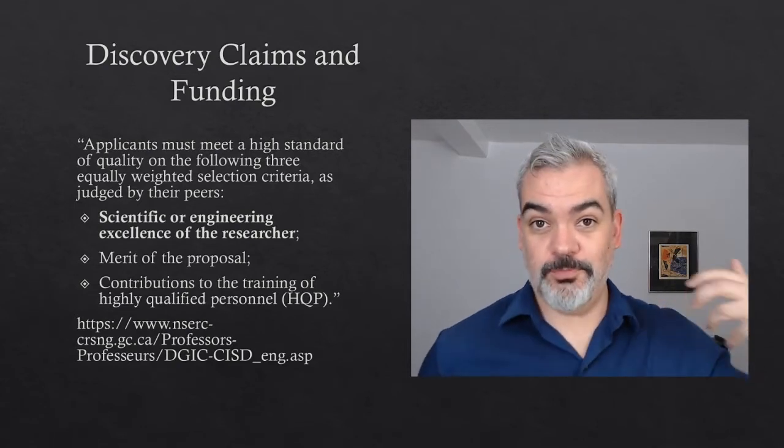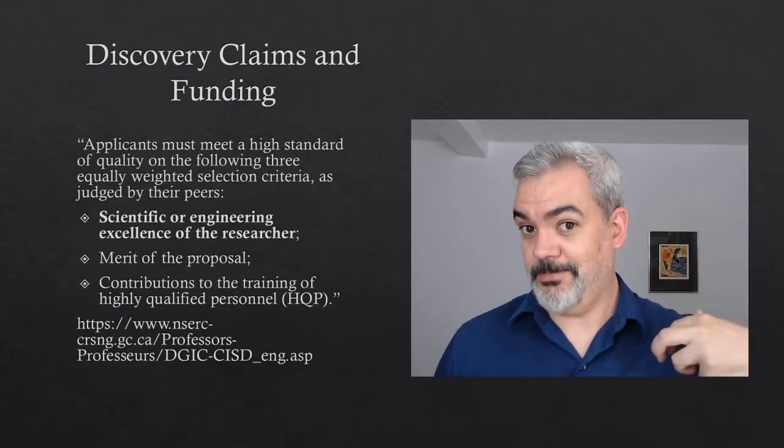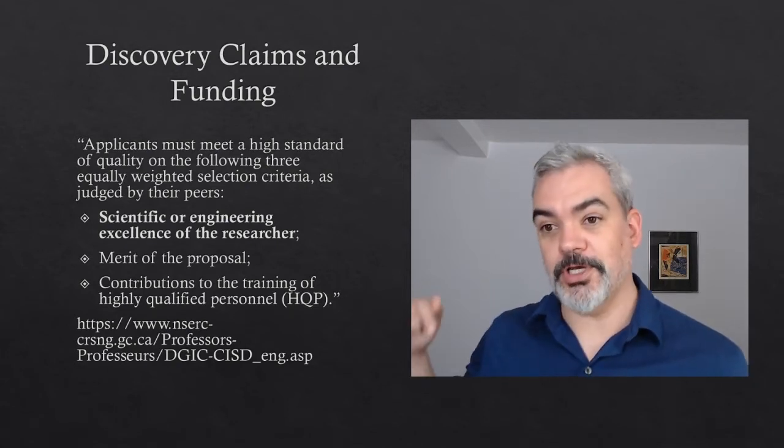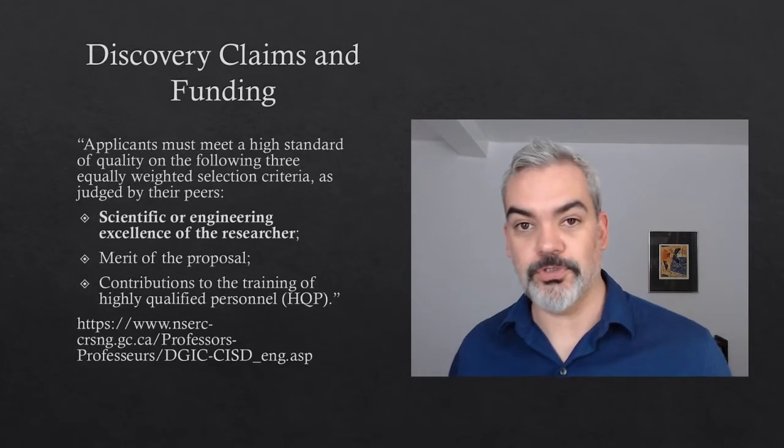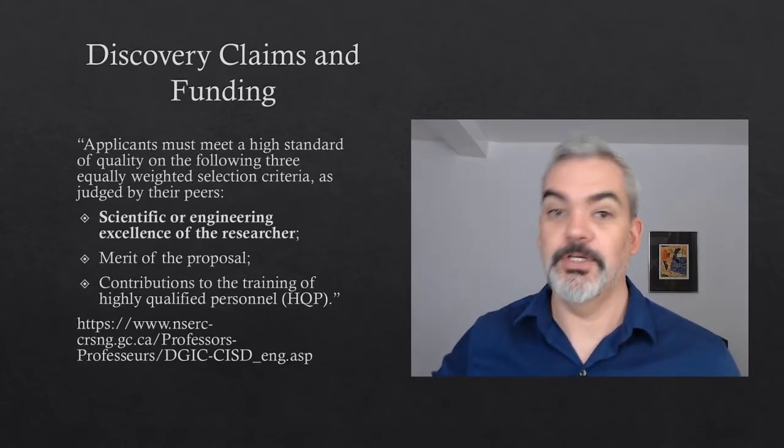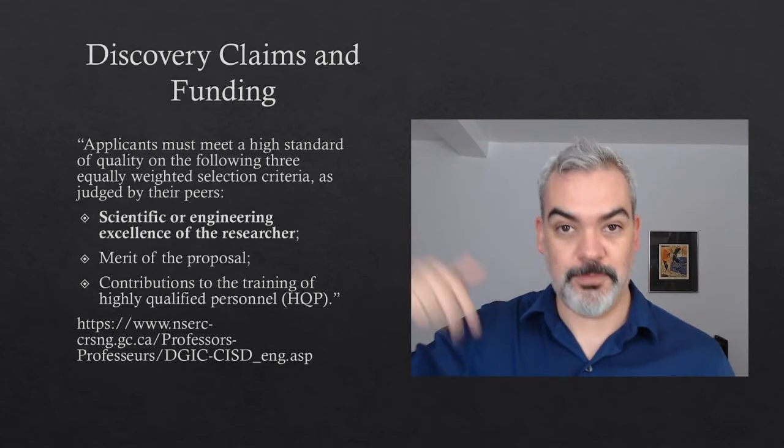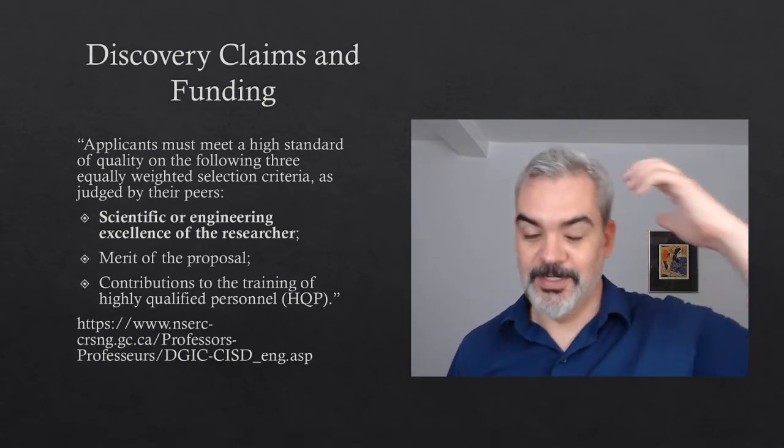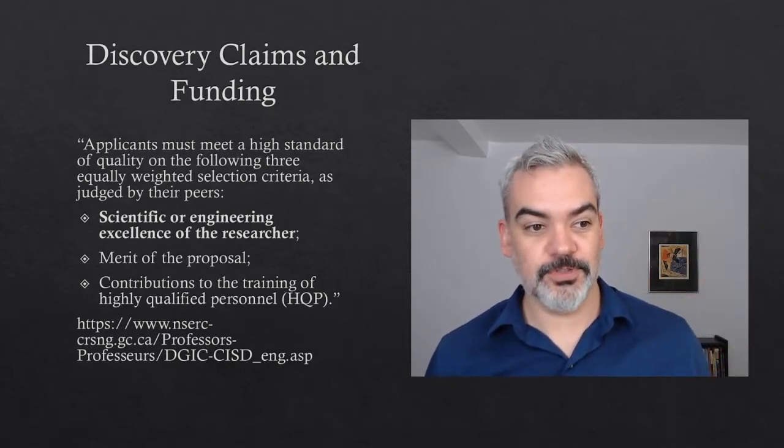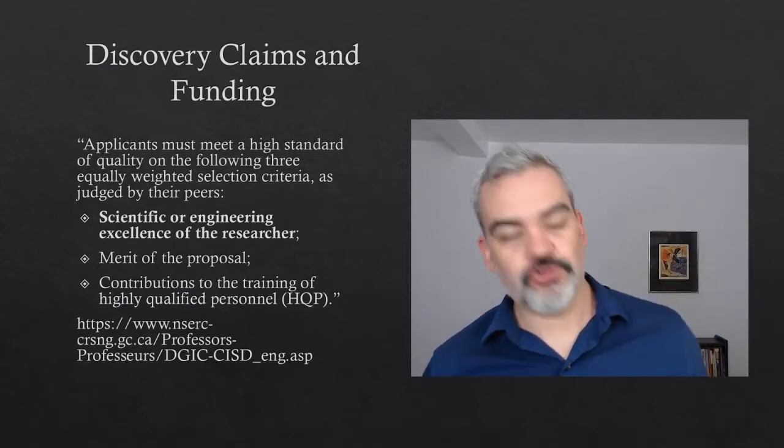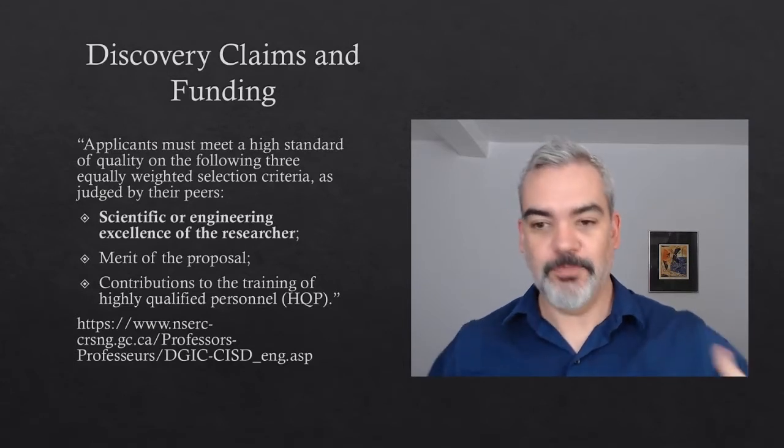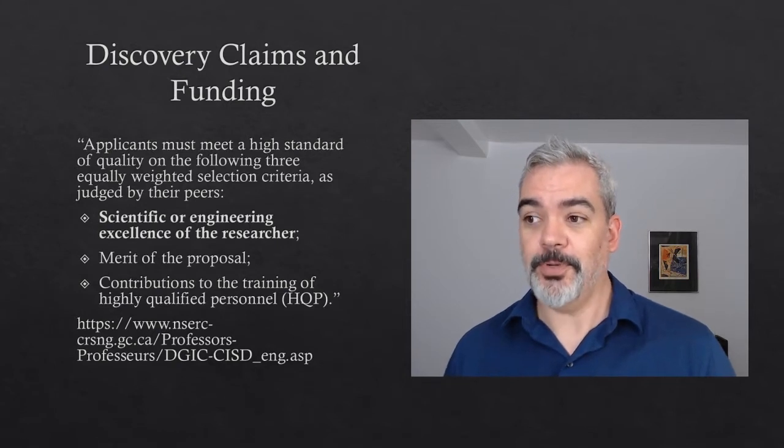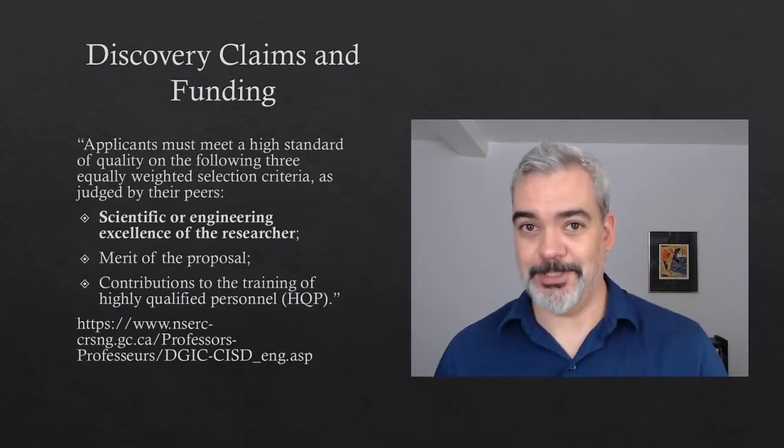And what they mean by that is, how much have you published? Have you published interesting, important results in very high profile scientific journals? That's essentially what they mean by that. So to get money, you need to have made some discovery claims. To make discovery claims, you kind of need some money to fund your research. So junior scientists come on to larger research groups, participate in the research of somebody else. And that's how you get some credit for having made some discoveries. And that's how you get funding to do your own research.